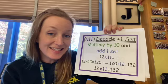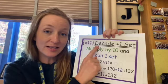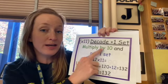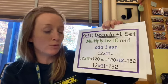Well, one strategy that you can use for your 11s is thinking about it as a decade fact plus one more set. In other words, you could multiply the number by 10 and then add one more set.